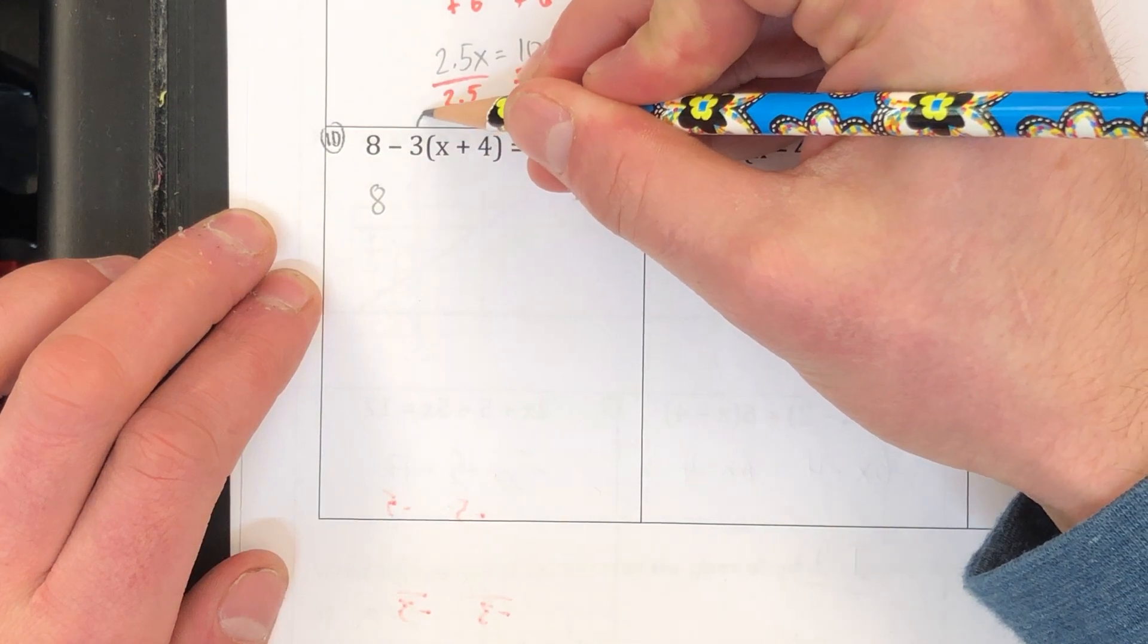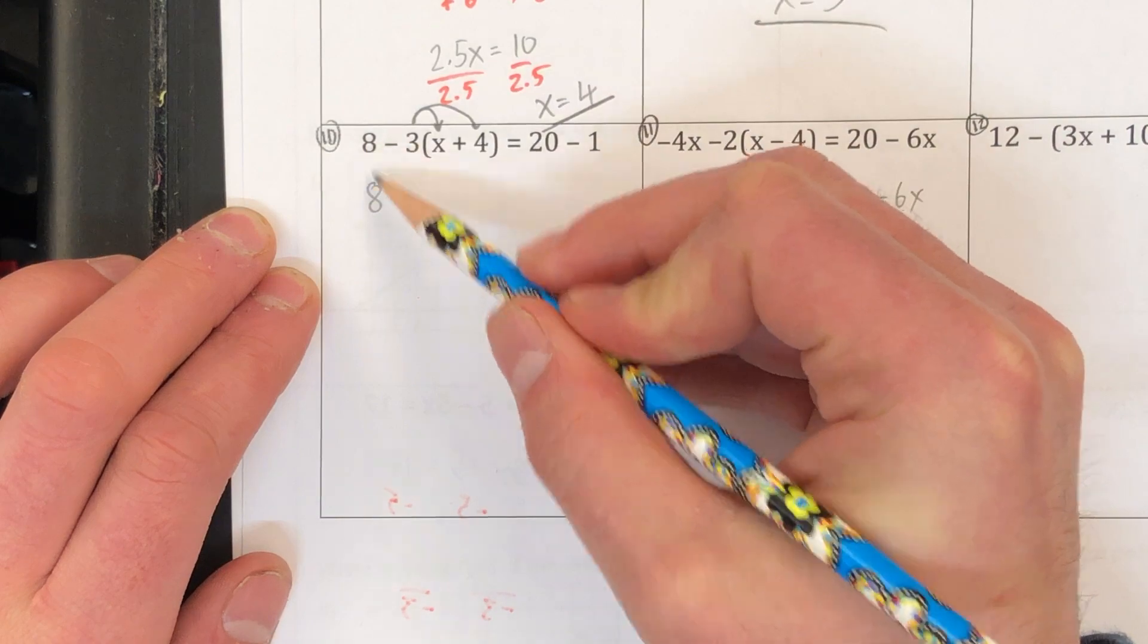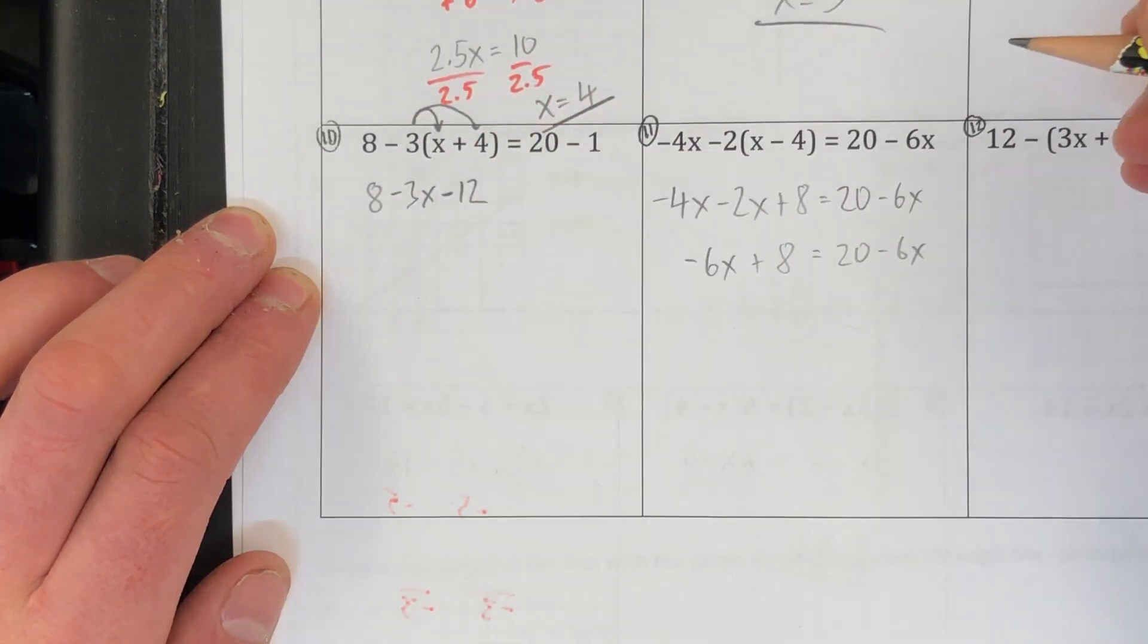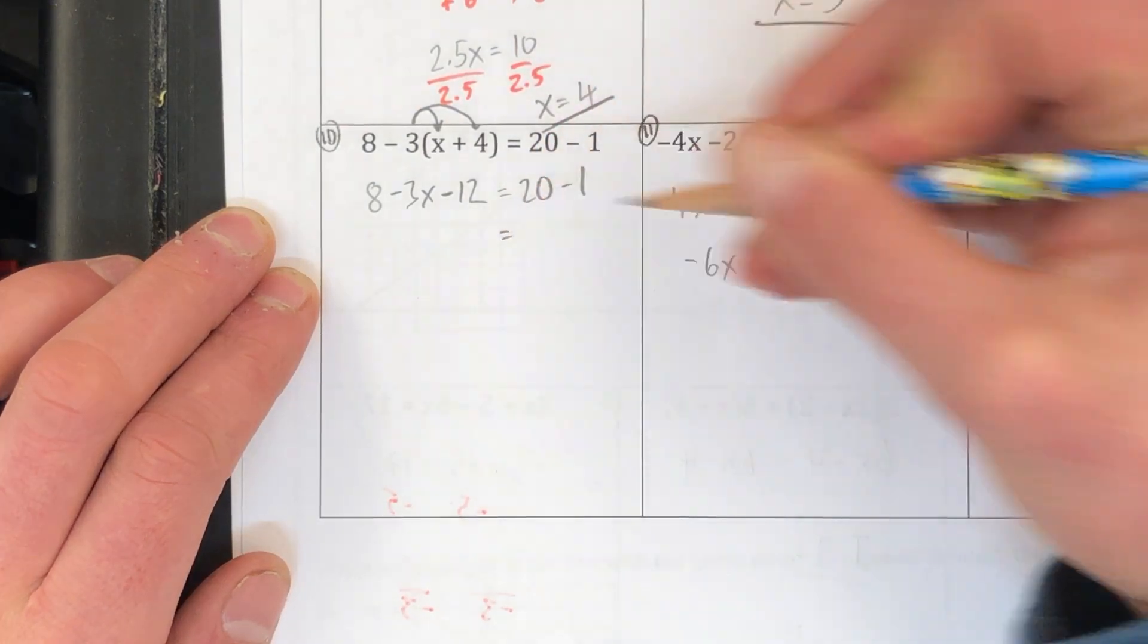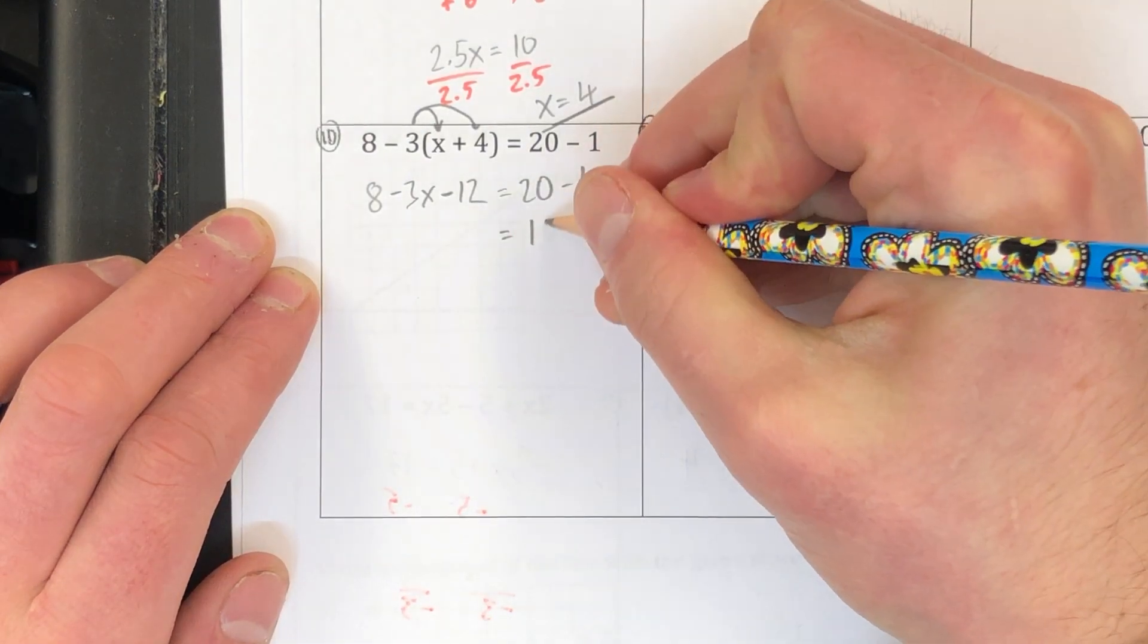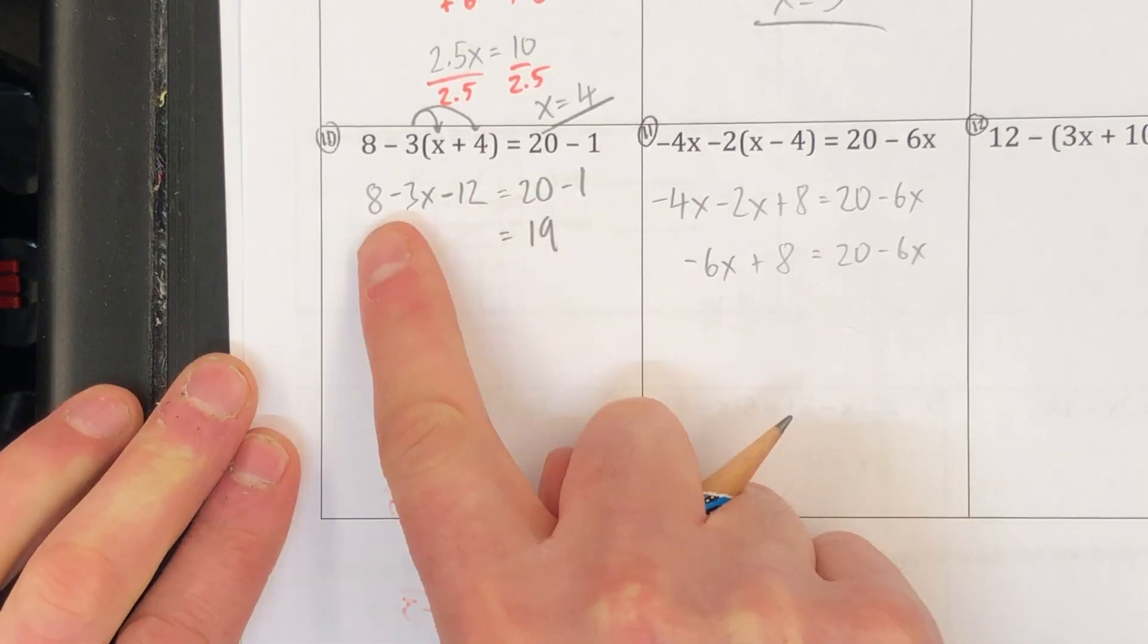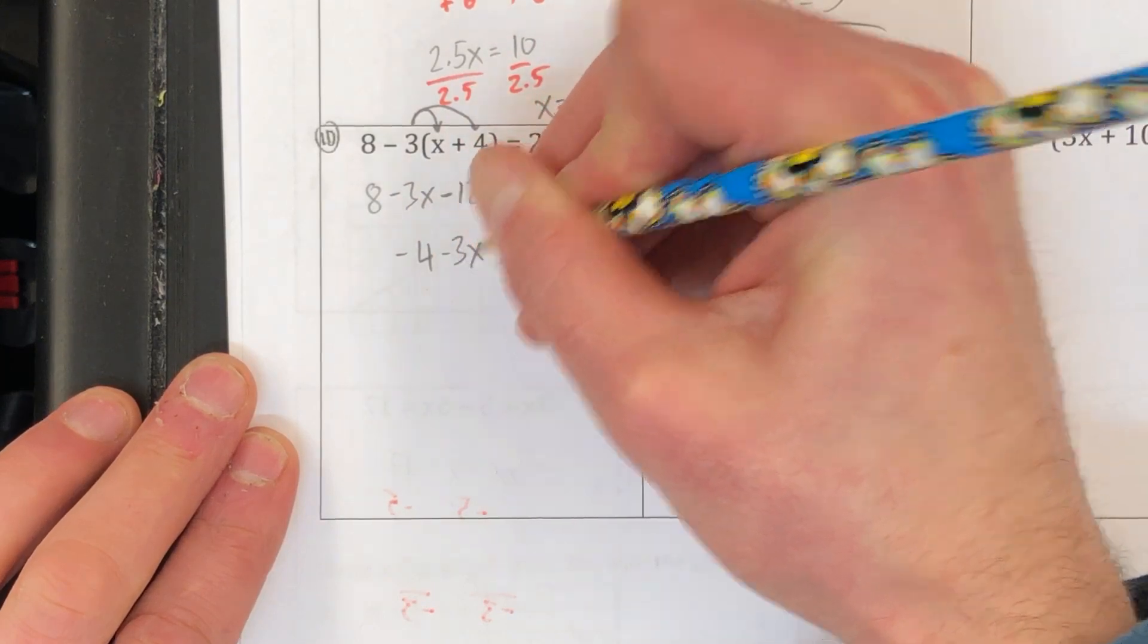For number 10 I'm gonna have to start with the distributive property here. So I carry down the 8, negative 3 times x is negative 3x, negative 3 times 4 is negative 12. On the other side of the equation I got 20 and I got minus 1. All right now on the right side these are both constants, 20 minus 1, I know what that is, that's 19. Over here I have a variable term, a constant on both sides. I'm gonna combine those constants together. 8 minus 12 is negative 4.